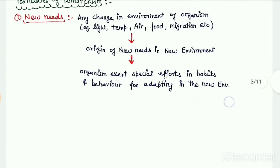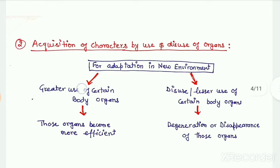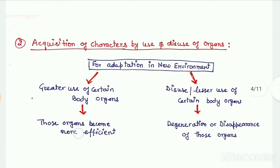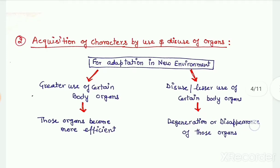In a new environment, organisms can adapt by changing their habits or behavior. Some body organs become more useful in the new environment, so the organism makes greater use of those organs, causing them to become more efficient. On the other hand, some body parts may become less useful compared to the earlier conditions, so these parts are used comparatively less, causing them to undergo degeneration or even complete disappearance.